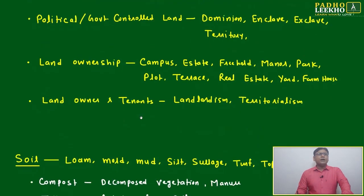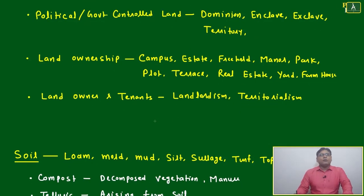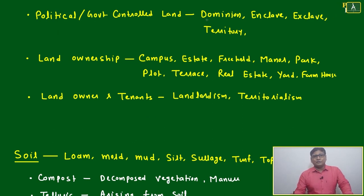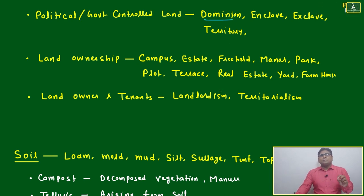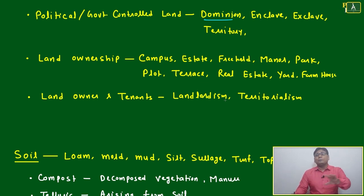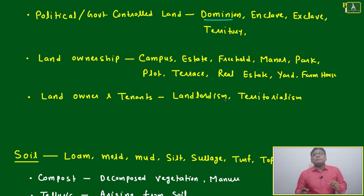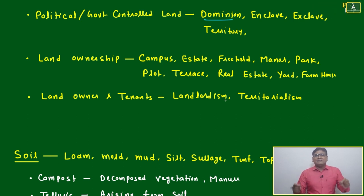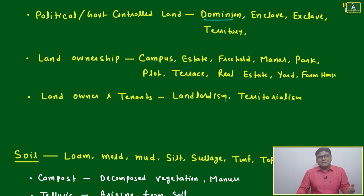Land which is government or politically controlled is called by different names. One is dominion — for example, when British people were ruling a certain part of India but not all of India, that part could be called a British dominion. It is actually in India, so they can't call it a British nation, but it was temporarily controlled by the British — that is British dominion, meaning dominated by the British.